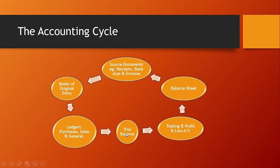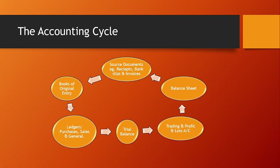From the ledger we move to the trial balance. The trial balance acts as a checking system to verify the work done in the ledgers, because in accounting we don't want to make mistakes — you're dealing with money. Then we move on to the final accounts, which are prepared at the end of the accounting period. You have the trading and profit and loss account and the balance sheet. The new names are the income statement and the statement of financial position.